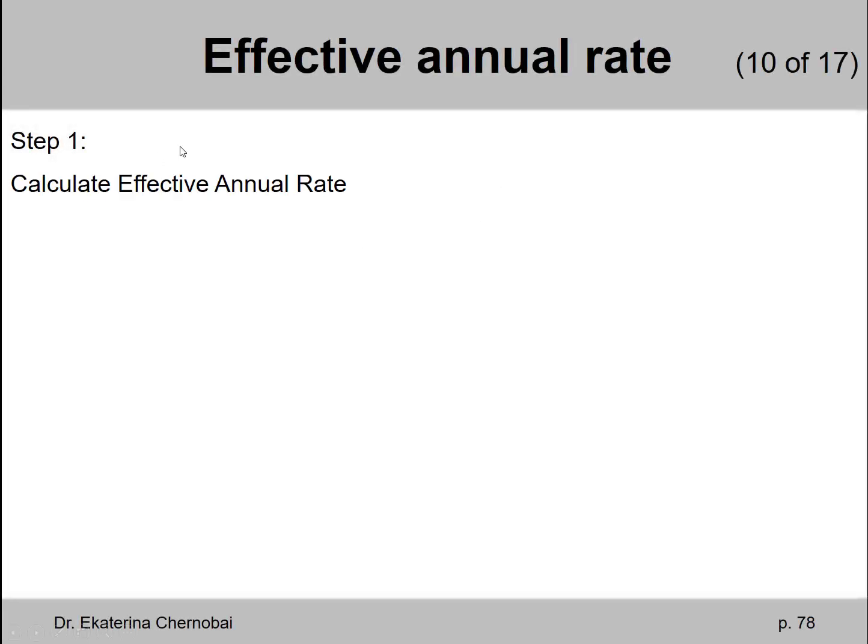So step one, we calculate the effective annual rate. We can use the formula, use 4 for M and 8% for the quoted rate. That gives us 8.2432%.